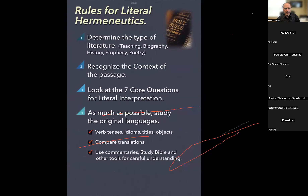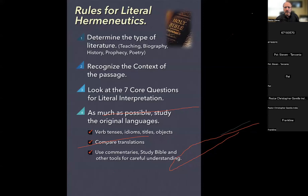Let's go back to the rules. We determine the type of literature. We understand the context. We look at the seven core questions. And then here's the fourth rule: as much as possible, study the original languages. The original language of the Old Testament is Hebrew and the original language of the New Testament is Greek. Some of us have had greater opportunities to study original languages than others. There are tools that help us — computer programs, having different Bibles — and that's why I say, if you can, always have at least two or three good translations. The Bible was communicated to us by God's breathing into the writers, and the original writings of Scripture were flawless — absolutely perfect. But there is no such thing as a perfect translation.